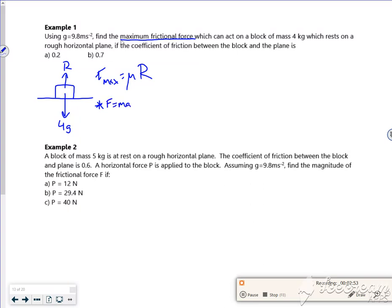it's not moving anywhere. So up minus down is equal to zero. So R minus 4G is equal to zero. So R is 4G.